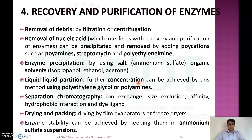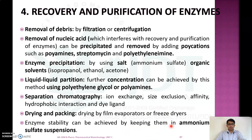After precipitation, we concentrate the enzyme solution by liquid-liquid partition using polyethylene glycol or polyamide. This gives a mixture of alpha, beta, or gamma amylase, which is separated by chromatography using ion exchange, size exclusion, affinity, or hydrophobic interaction methods. Finally, the enzyme is dried and packed using a film evaporator or freeze drying, and enzyme stability is maintained by keeping it in ammonium sulfate suspension. That completes the fermentative method.